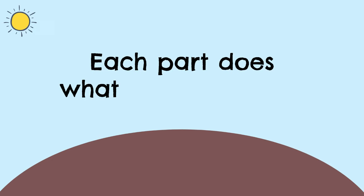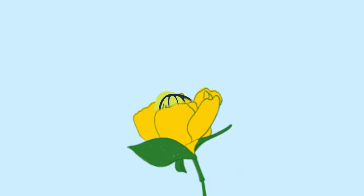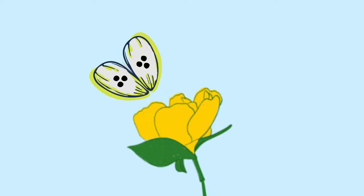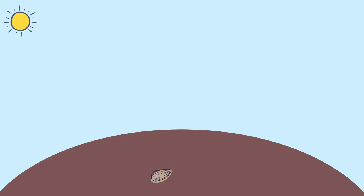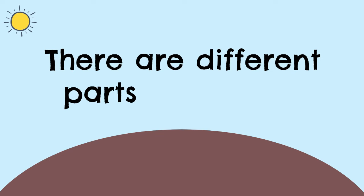Fruit is what comes out of a flower. Seeds are found inside the fruit. When a seed gets into the soil, it starts to grow a brand new root.